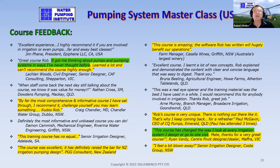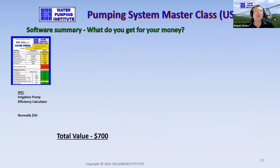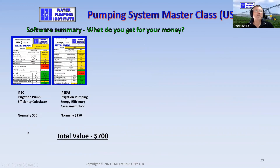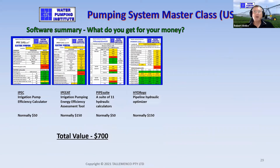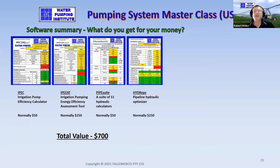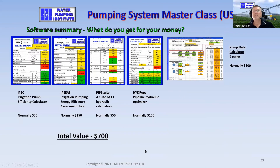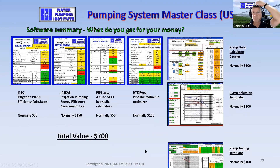Here's a summary of the software we have: IPET — the Irrigation Pump Efficiency Calculator; IPETE — the Pumping Efficiency Assessment Tool; the Pipe Suite; and Hydrops. All four are on the cloud, and the course will give you a QR code — just click on it to download the link to your phone. You also get three additional spreadsheet tools, delivered to you in total.